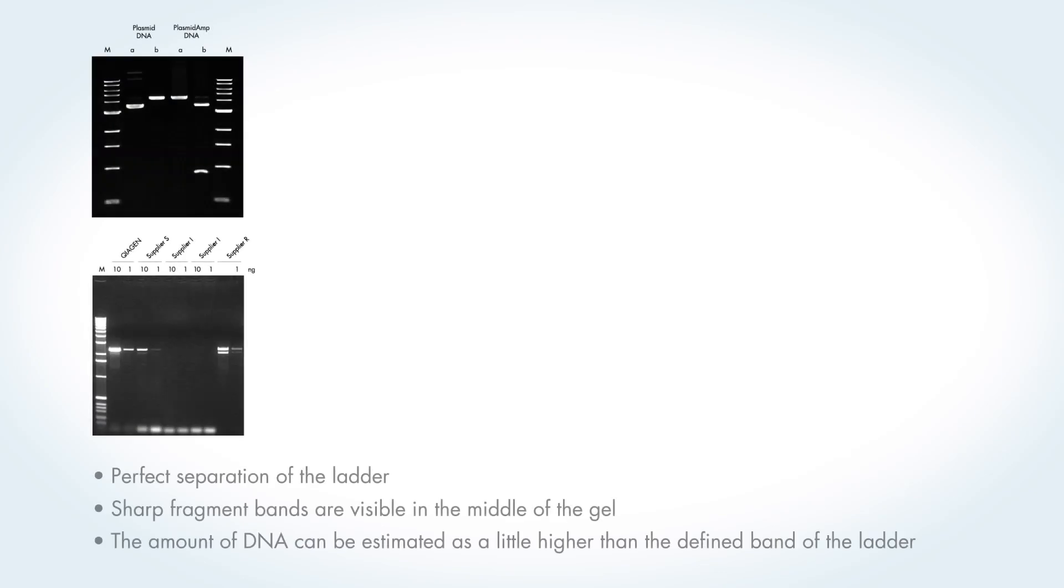On this last slide you can see two examples of perfect agarose gels. The upper one shows the gel we saw previously in slide 2. The ladder fits perfectly to the band size of interest, and is clear and sharply separated. The defined band in the middle allows optimal comparison with the bands of interest.